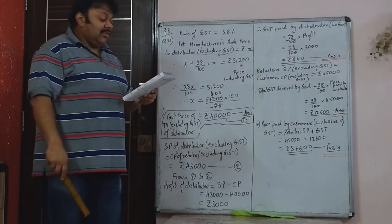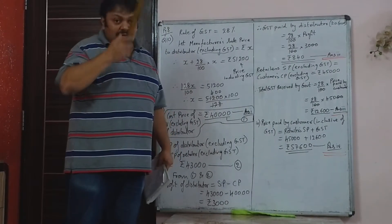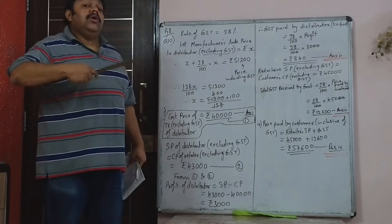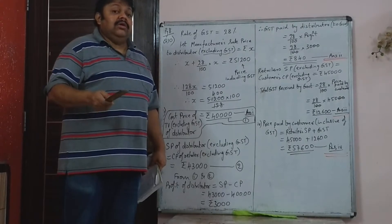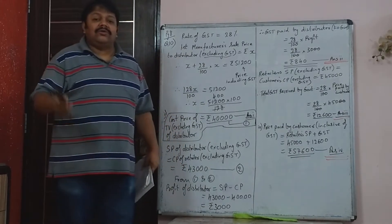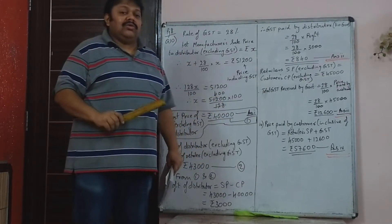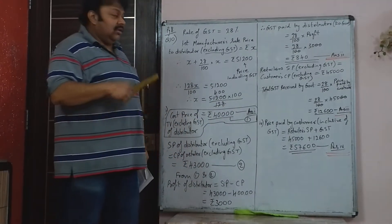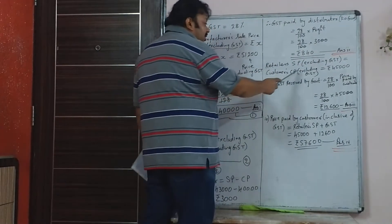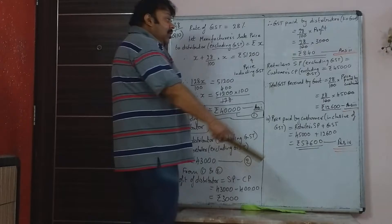Total GST received by government from the sale of the TV: you have to find the price paid by the customer, or the sale price of retailer. On that price, 28% would be the total GST received by the government. Retailer's SP or customer's CP without GST is Rs. 45,000.